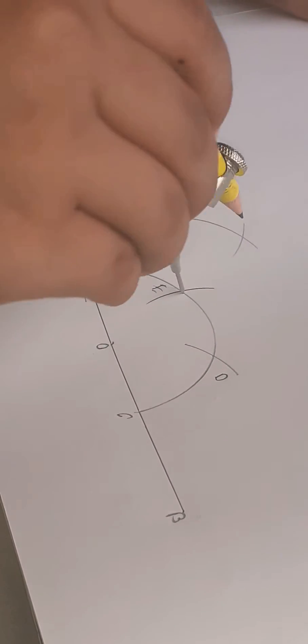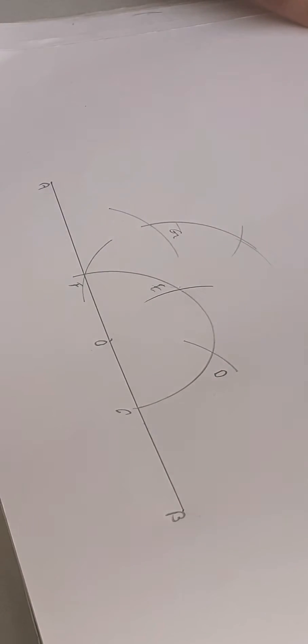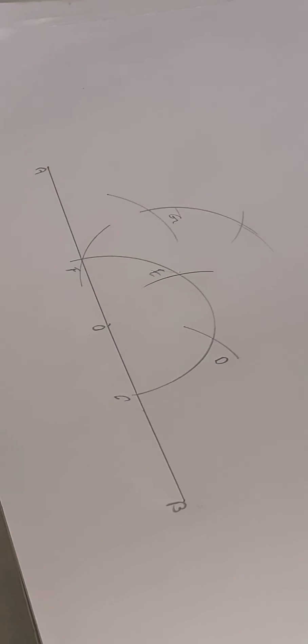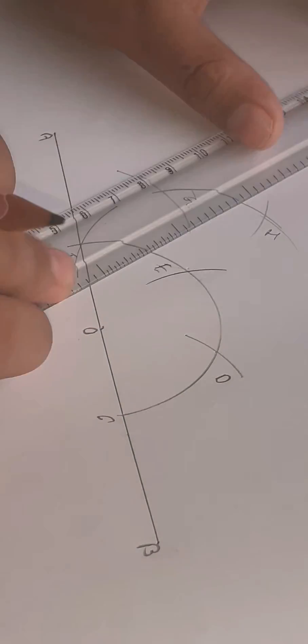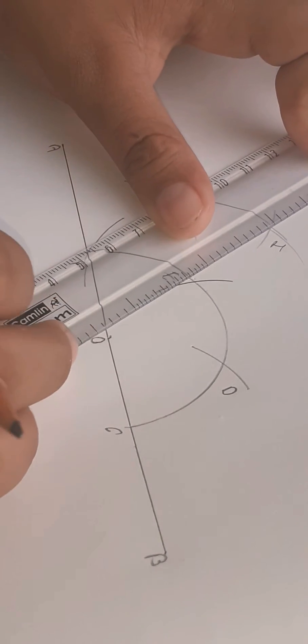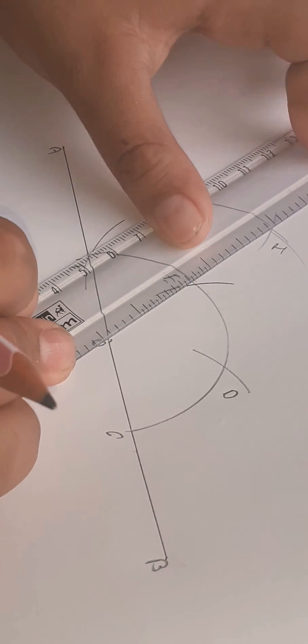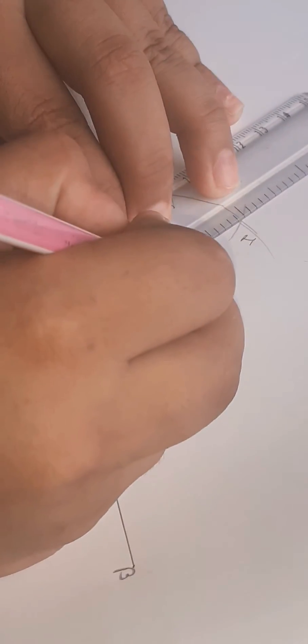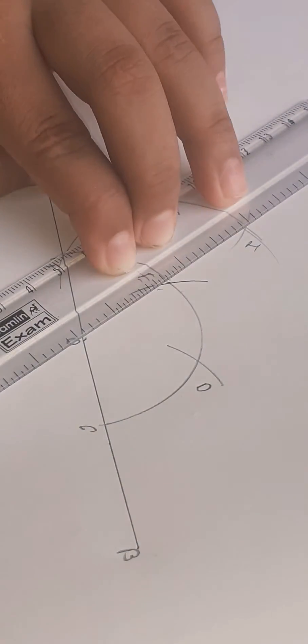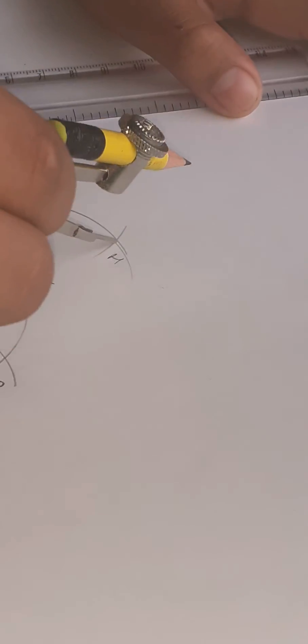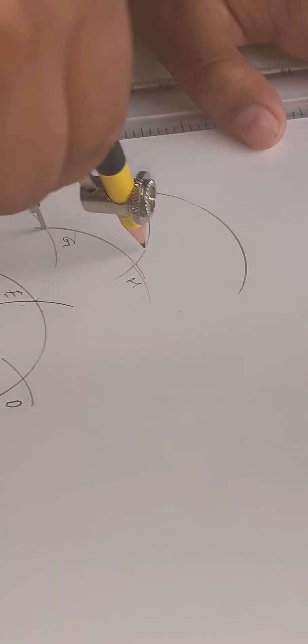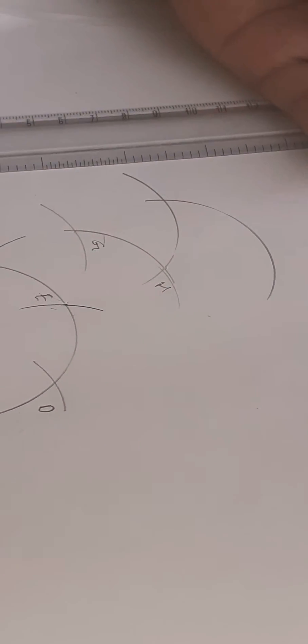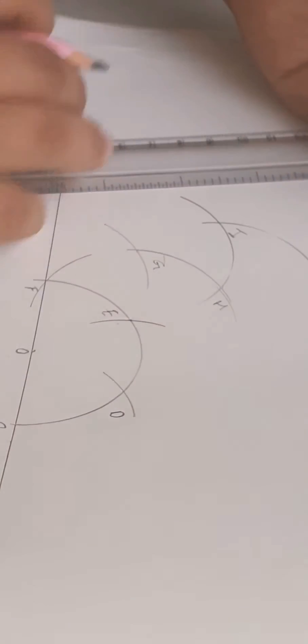Put the compass needle at E and draw an arc. Name it H. Take the junction. Put the compass needle at H and cut an arc. Put the compass needle at G and cut an arc. Write your I.